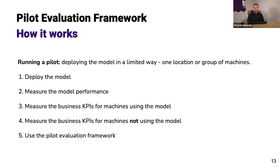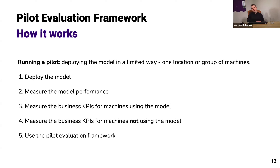We also measure a control group — the business KPIs for machines not using the model recommendations. There will be a control group where we do not use model recommendations in the real world. We can still make predictions for those machines but won't act on them. Hopefully we see that recommended actions have a positive impact on downtime and machine issues. To do that, we use the pilot evaluation framework — a framework we designed together with industry partners to evaluate pilots quickly and efficiently.